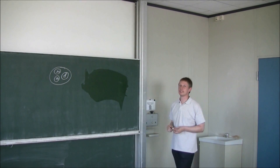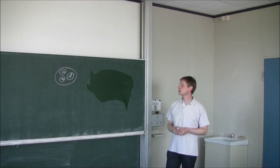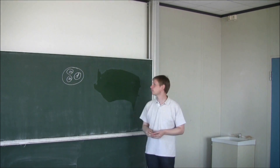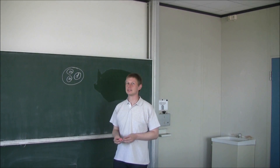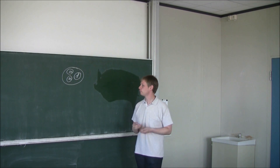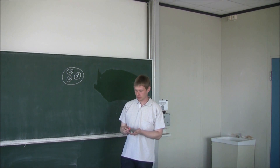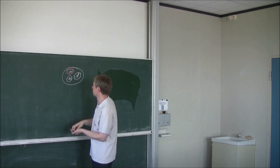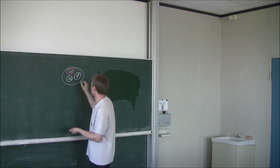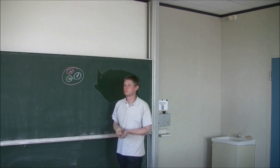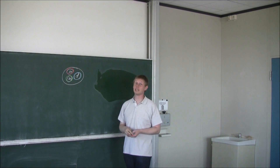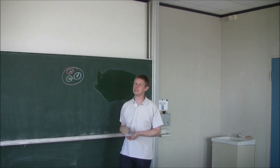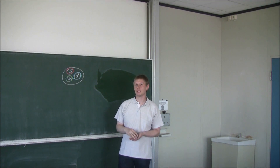Die Up-Quarks haben eine elektromagnetische Ladung von plus zwei Drittel der Elementarladung, die Down-Quarks eine Ladung von minus einem Drittel der Elementarladung. Daneben besitzen sie noch eine andere Ladung, die man Farbladung nennt und die drei Werte annehmen kann: Rot, Grün und Blau. Insgesamt muss ein Proton oder auch ein Neutron farbneutral sein, das heißt, jeweils ein Quark in einem Proton ist rot, eines grün und eines blau.